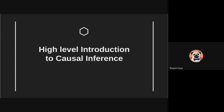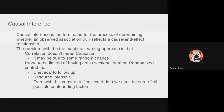Let's dive into causal inference. Causal inference is a term used for the process of determining whether an observed association truly reflects a cause-and-effect relationship. The problem with a machine learning approach is that if you see a correlation, that correlation does not necessarily mean causation.